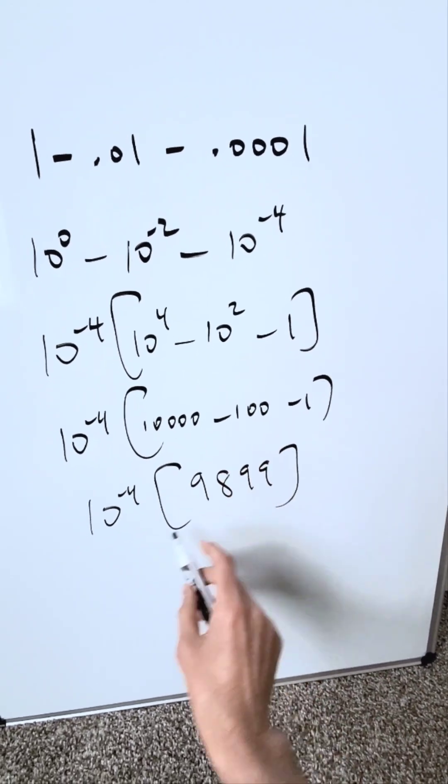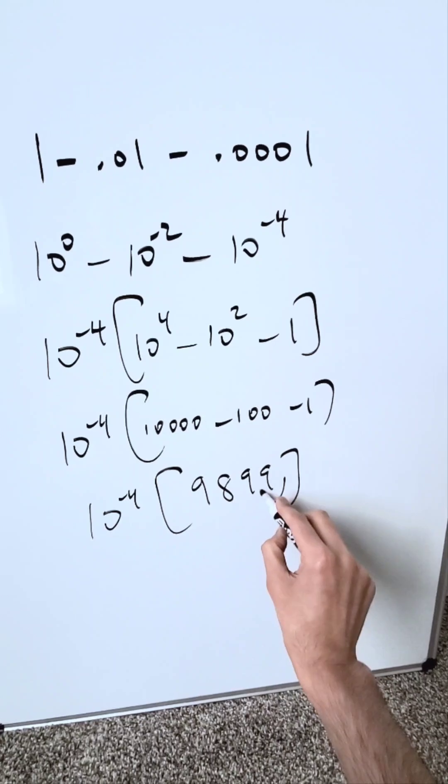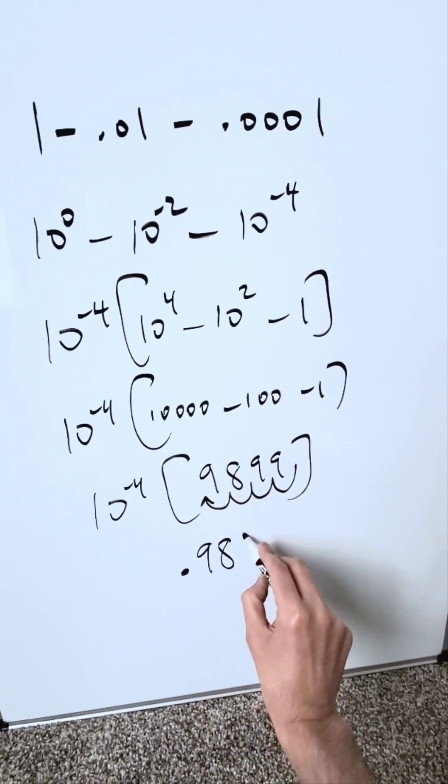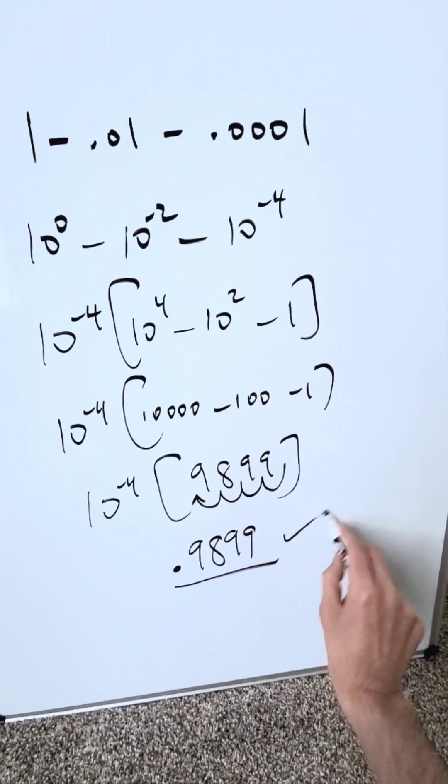Think about it. It's easy. You have four decimal places to move. I'm going to do four decimal places. And my answer will be 0.9899. And it will be correct.